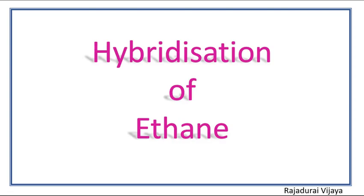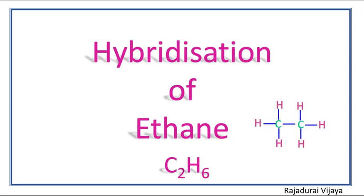Hi viewers, in this video we are going to discuss the hybridization of ethane. This is for beginners. The ethane molecular formula is C2H6. Its molecular structure is CH3-CH3. This is the structural model of ethane.